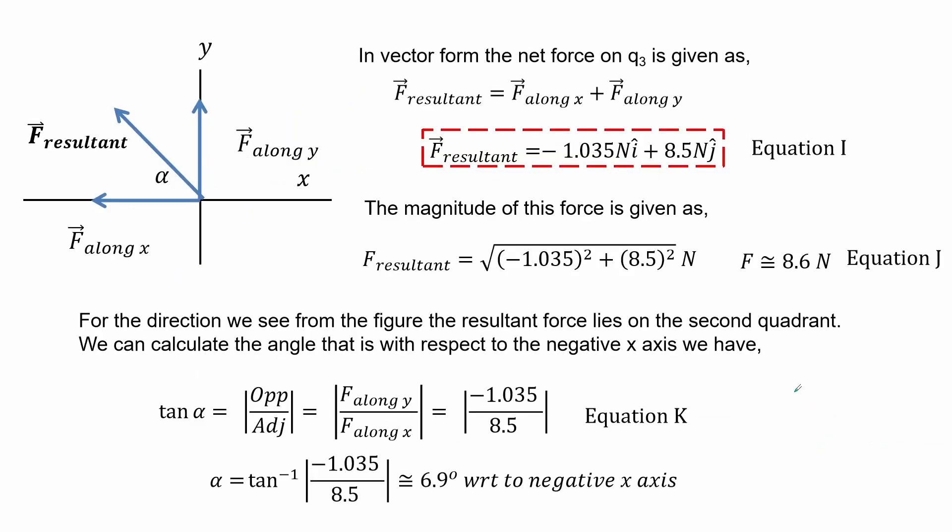Here we have the resultant force which is expressed by its components along the X and Y axis from Equations G and H, as shown by Equation I. Based on the signs of its components, the resultant is oriented in the second quadrant as shown by the figure. We can also solve for the magnitude and direction of this resultant force. For the resultant we use the Pythagorean theorem as shown by Equation J, which is about 8.6 Newtons.